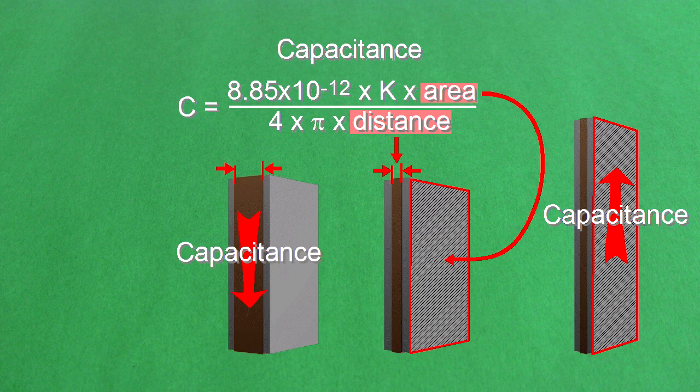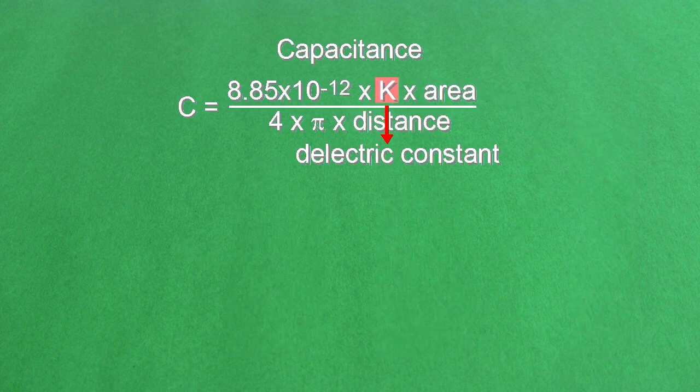And since the distance is in the bottom part of the equation, the bigger the distance, the smaller the capacitance, and vice versa.